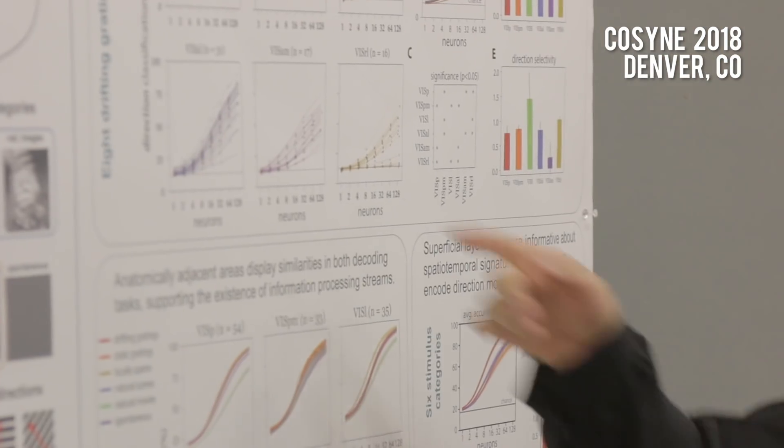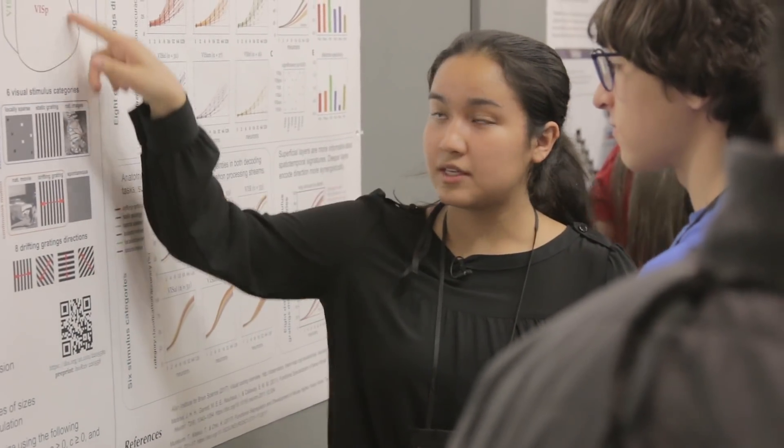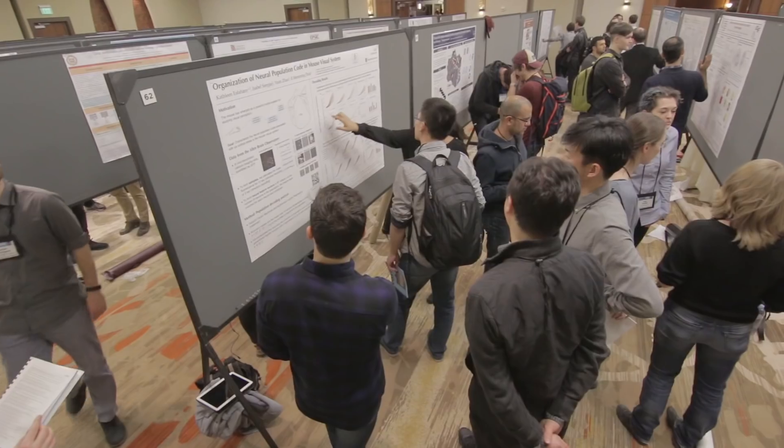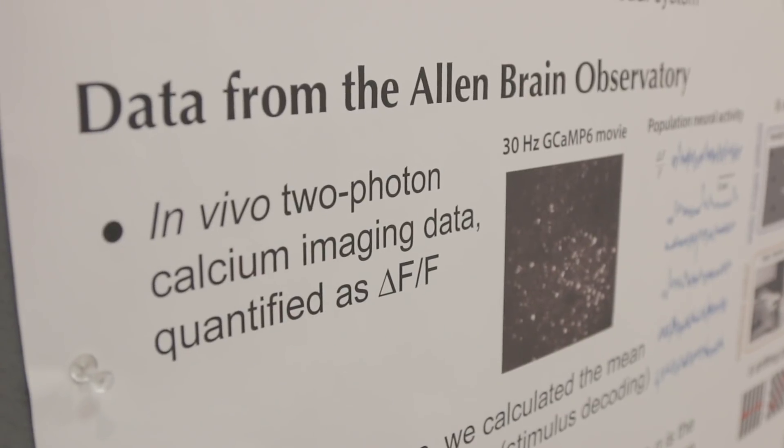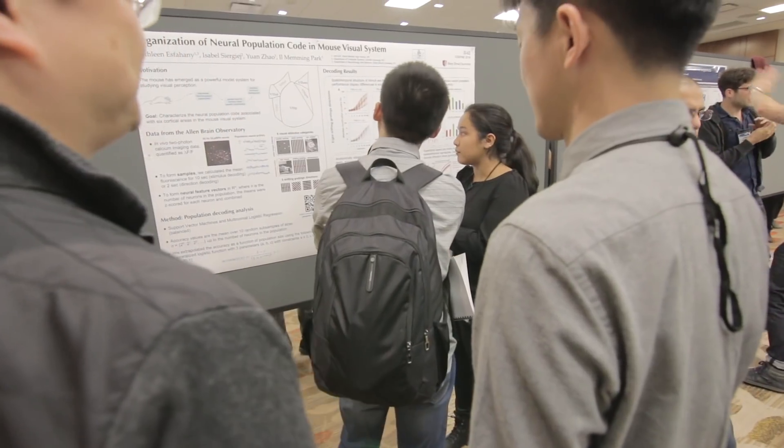Hi, would you like to hear about this? I used data from the Allen Institute. You might be familiar with them—they have a massive open data set. I looked at these six areas. I'm interested in studying how we perceive the world around us, especially in the visual cortex. The minimum number we went with was 10.